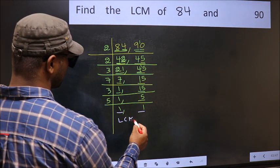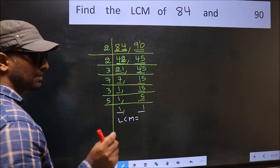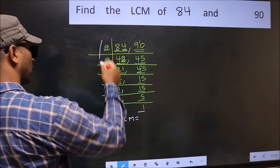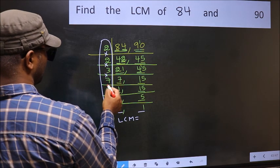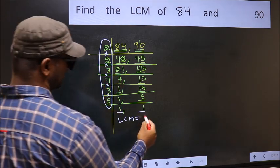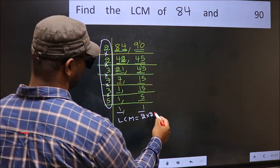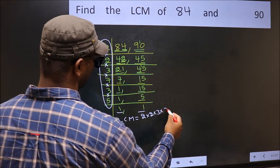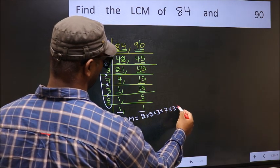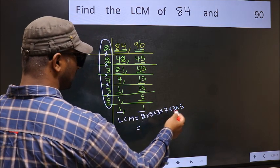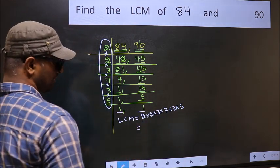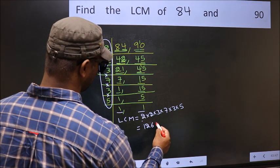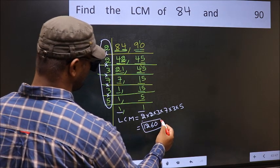So our LCM is the product of these numbers. That is 2 into 2 into 3 into 7 into 3 into 5. When we multiply these numbers we get 1260 is our LCM.